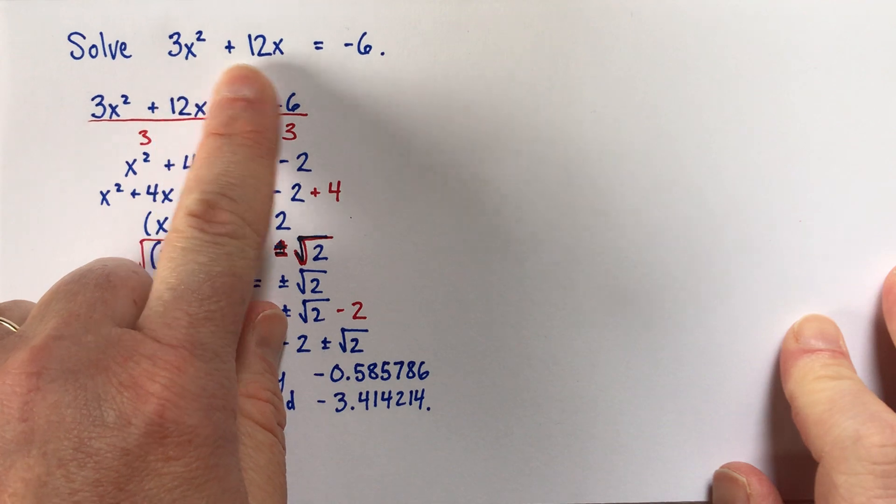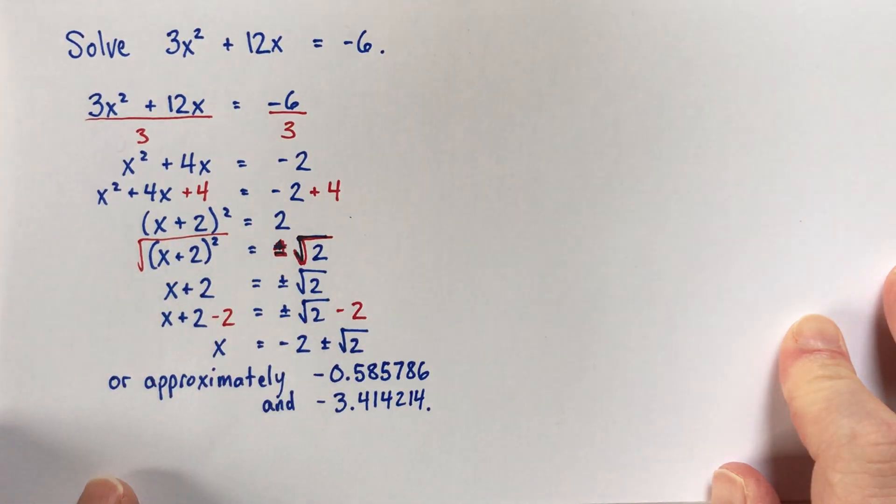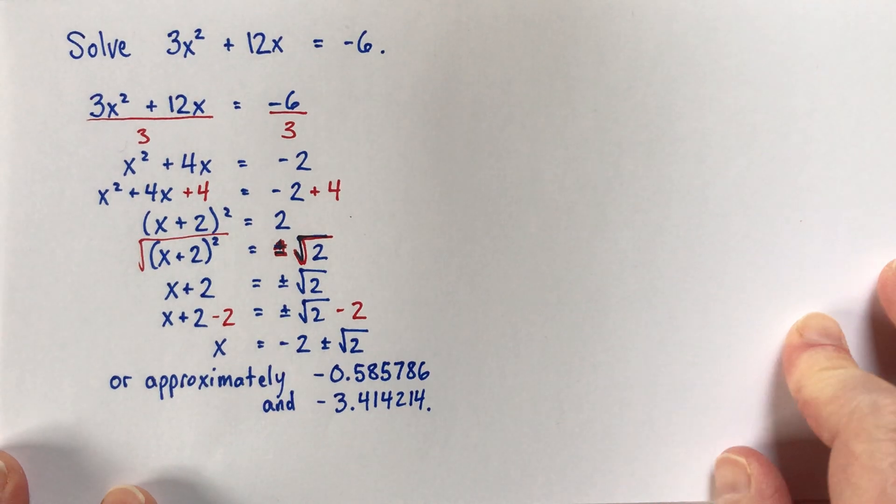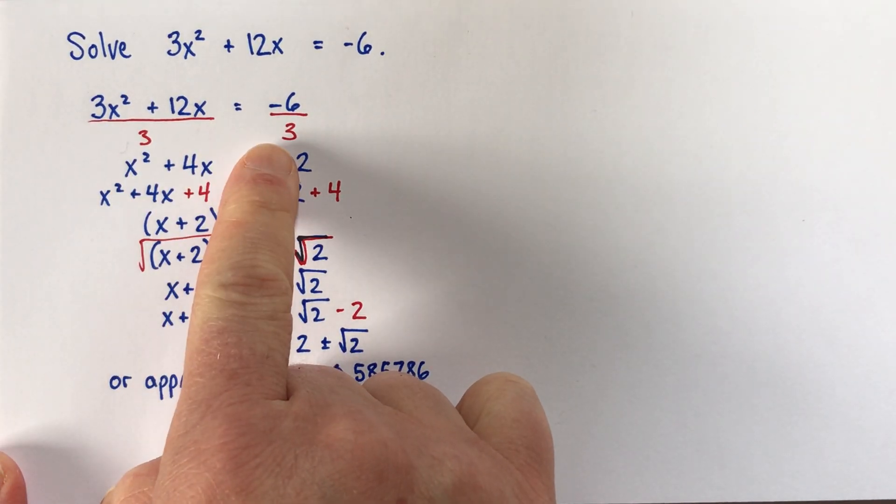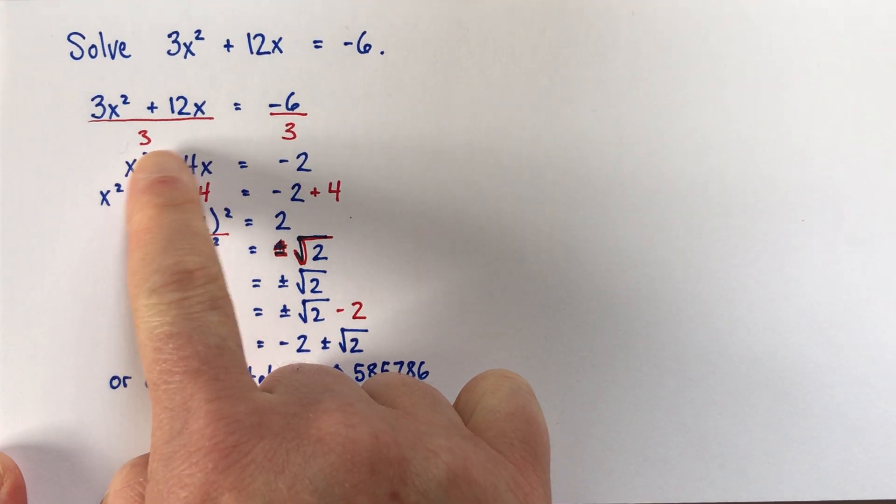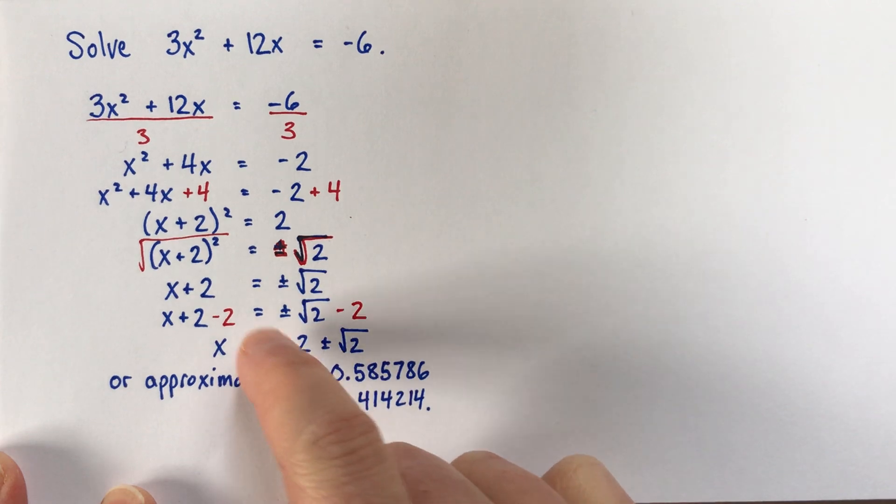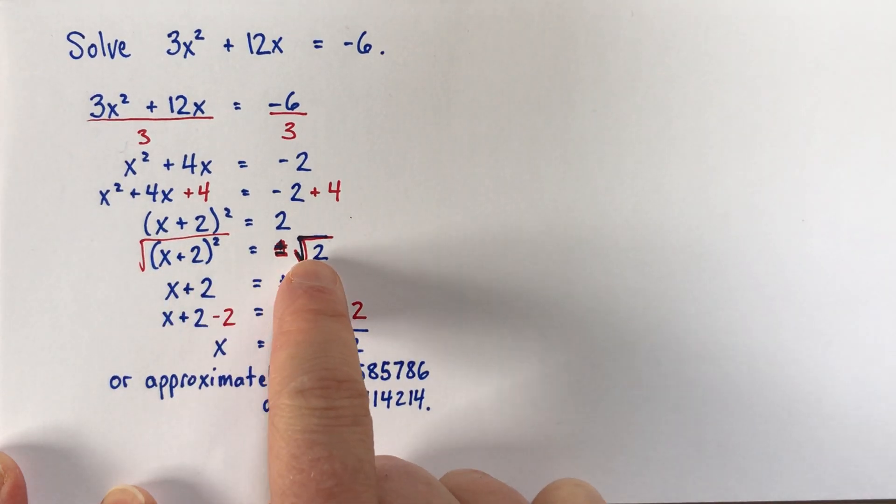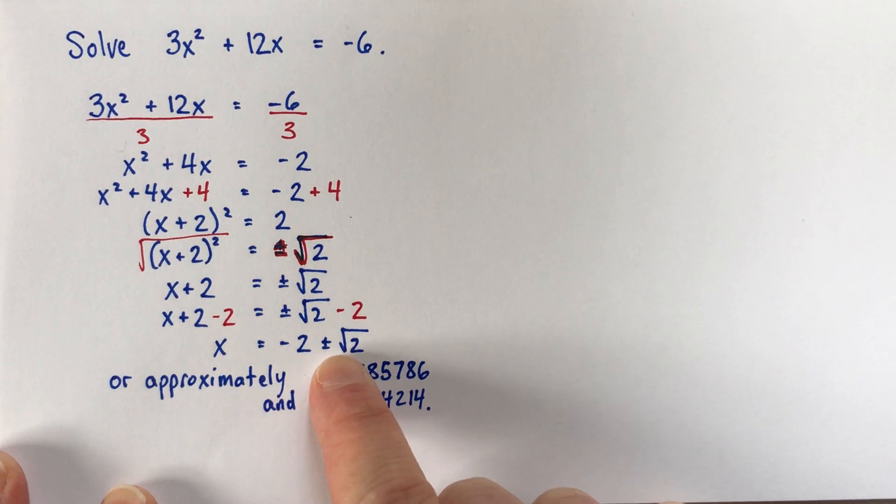If you're asked to solve 3x squared plus 12x equals negative 6, here I've just gone through. I'm just showing. So what I've done is the same operation to both sides. I divided by 3. And then here I added 4. And then here we took the square root. And here we subtracted 2. And here's our solution.